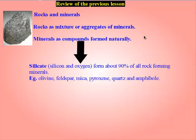In the previous lesson we looked at rocks and minerals, where we defined rocks as a mixture or aggregate of minerals — that is, when two or more minerals combine, rocks are formed. Minerals on the other hand are compounds that are formed naturally, and compounds are formed when two or more elements combine.